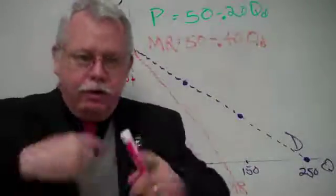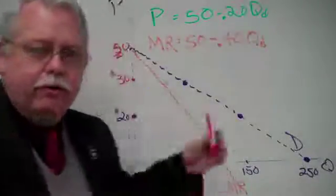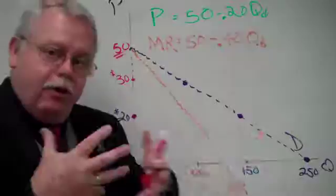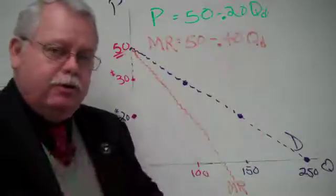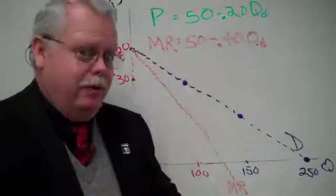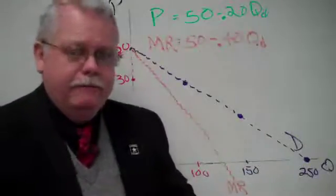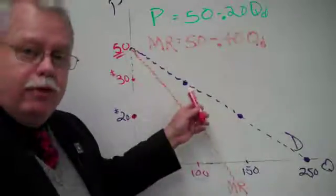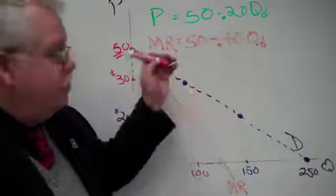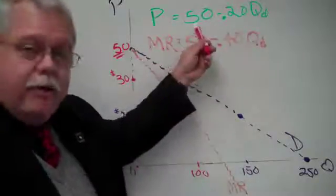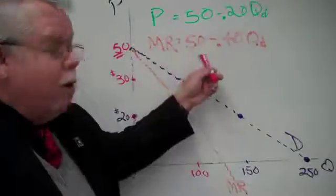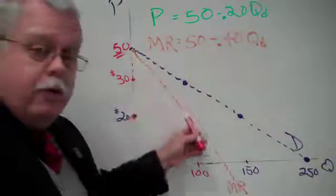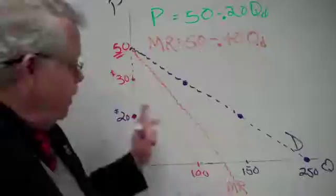This is the third video in this little series. We're looking at this company's demand curve and drawing some conclusions from it, or at least some possibilities. Remember, we've identified two points of data. We've constructed the demand equation, the inverse demand equation, the marginal revenue equation. We know where the marginal revenue curve is visually.